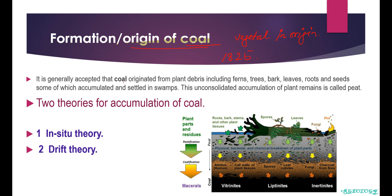It is generally accepted that coal is generated from plant debris, including fern trees, bark, leaves, roots, and seeds — all parts of the plant. As you can see here, the tree has leaves, spores, roots, and bark. All these parts of the plants accumulated and settled in the swamp, slowly decomposing and settling down.